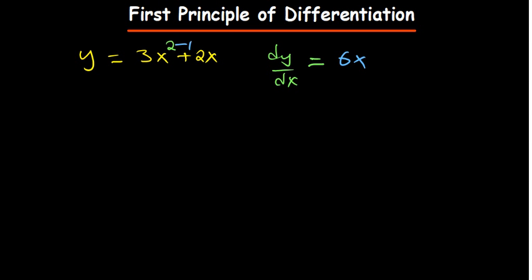So 3 times 2 is 6x, reduce the power by 1, it becomes just 1. And then all the same, x to the power 1 times 2 is 2, reduce the power by 1 becomes 1 minus 1 becomes 0, x to the power 0 is just 1. Okay, so you therefore have 6x plus 2 as a solution.